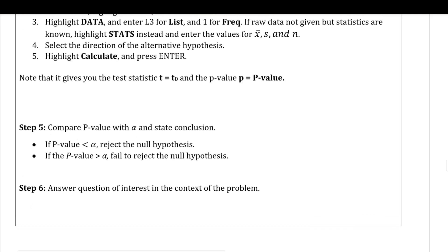Step five is the same as before — make our decision based on the p-value and your significance level. Then step six, we go ahead and answer the question of interest in the context of the problem.